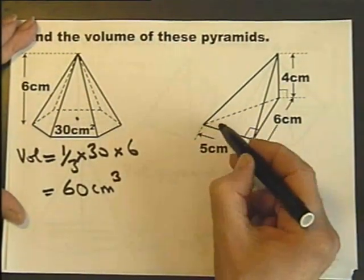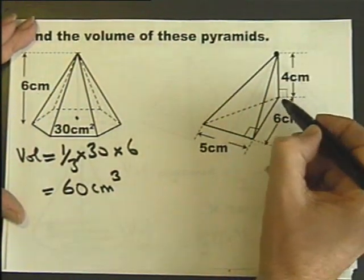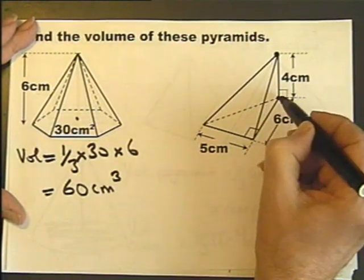Now this is a triangular-based pyramid, even though the vertex is above one of the corners of the triangle. It's still a triangular-based pyramid.